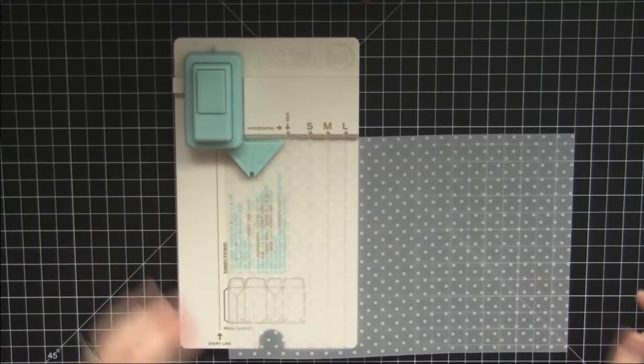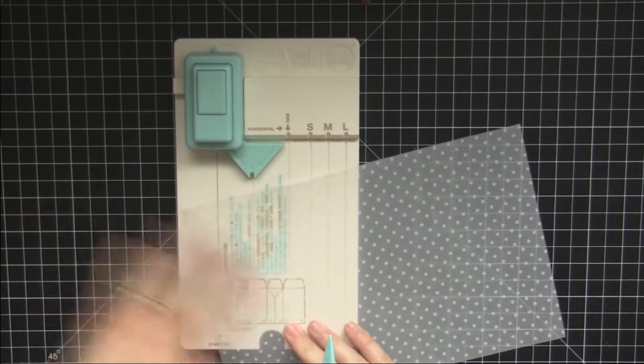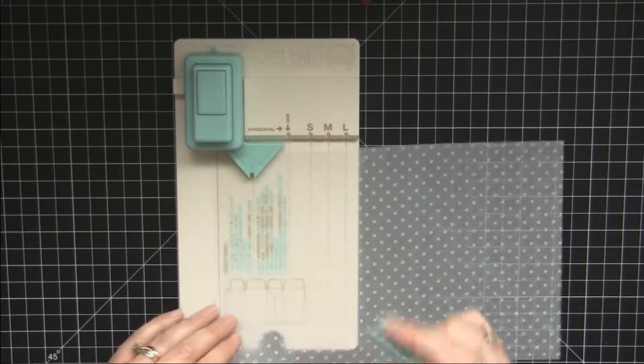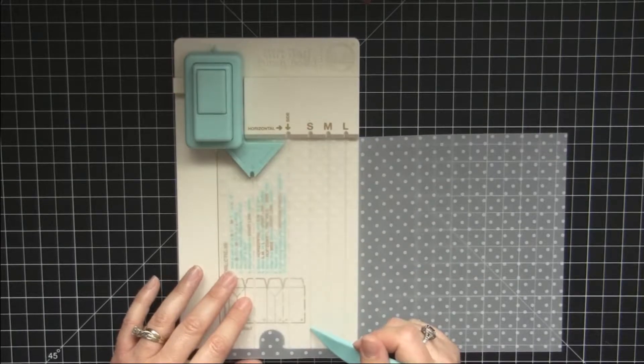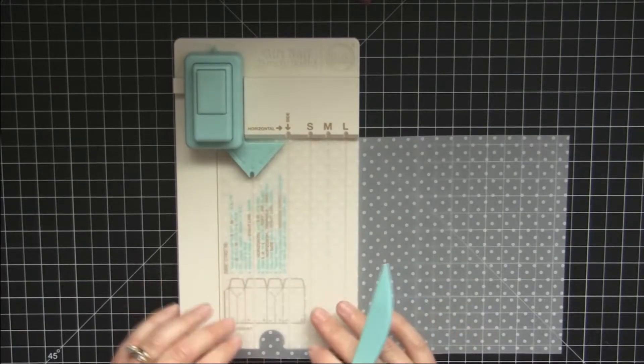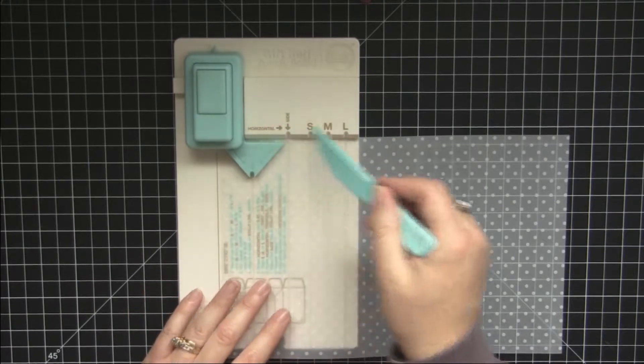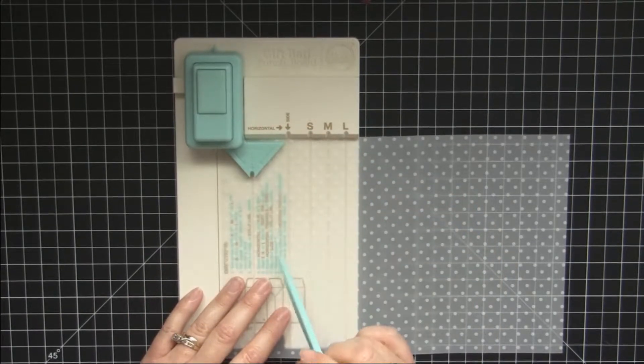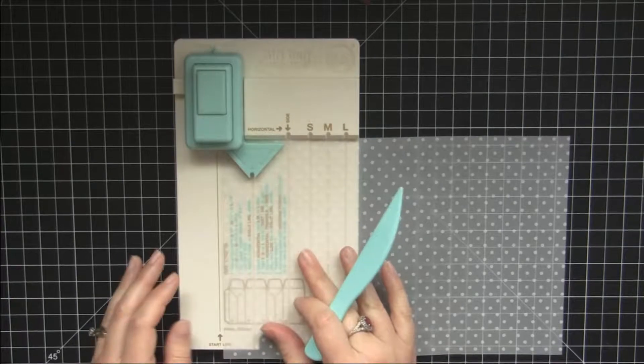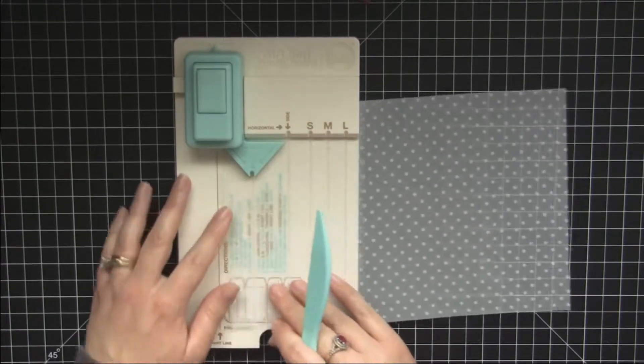And I've shown videos on how to use this punch board before, but if you have a pattern paper you want to make sure that the pattern is upside down when you put this in because when you're punching it you're actually punching the bottom of the bag. So just keep that in mind.